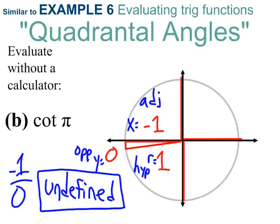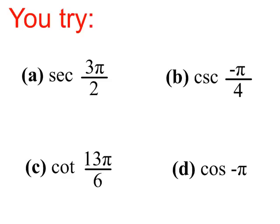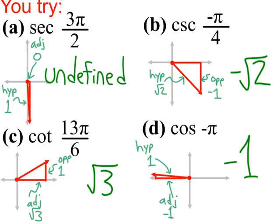For quadrantal angles, sometimes your answer will result in 0 in the denominator. We'll just call that undefined. Your turn. Pause and try these four. They may or may not be quadrantal angles. Here are the solutions. If you're having any trouble at all, please make it a priority to come by. This is really crucial stuff for what we're going to be doing throughout the second and third quarter.